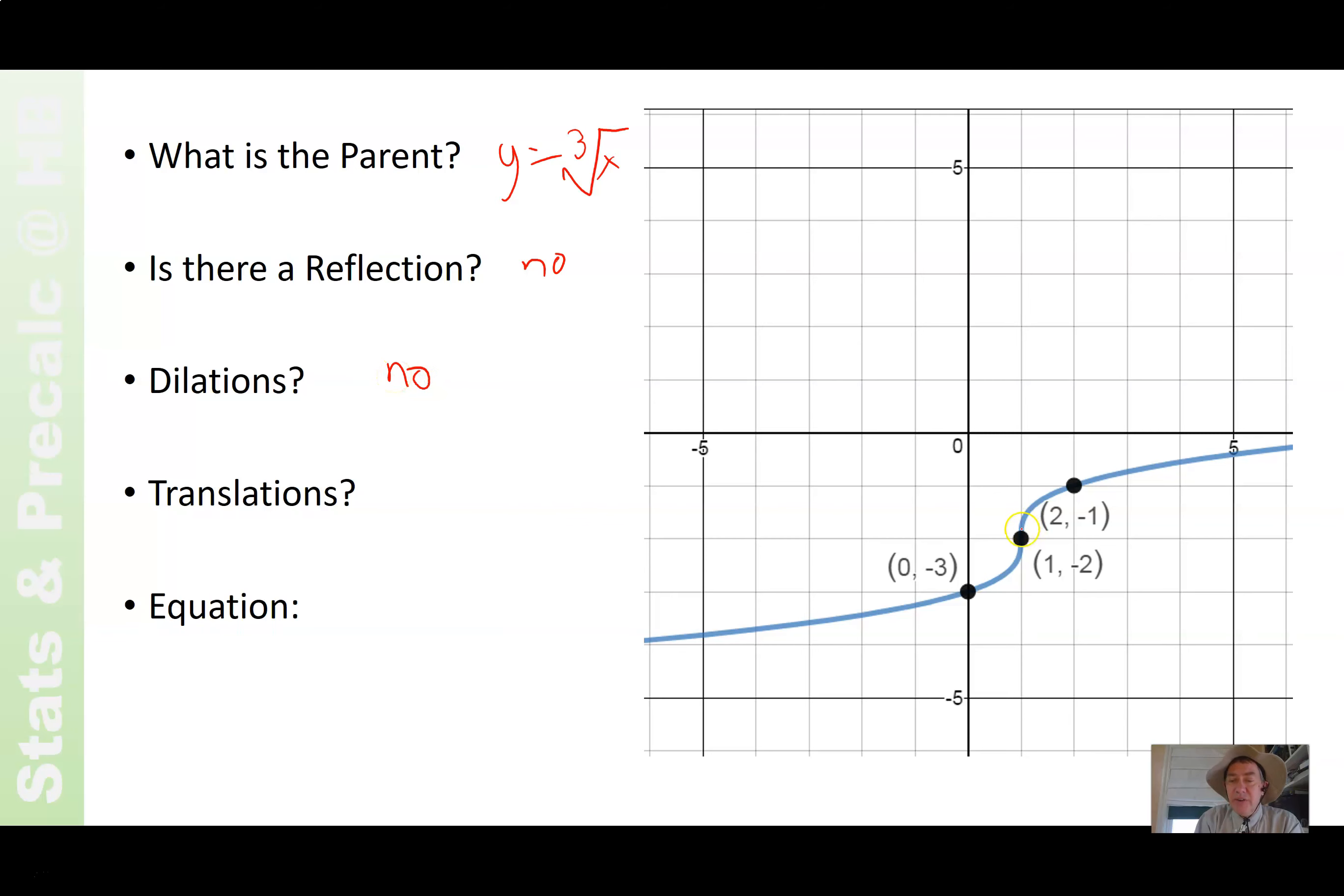It is translated, however, and this is where you're looking at this key point, the inflection point, where the curvature changes. That's the point that used to be at 0, 0. So now we have gone to the right 1 and down 2. That's all we need for our equation. Y minus 2, y plus 2, equals the cube root of x minus 1, or y equals cube root of x minus 1 minus 2. Either way is totally legit.